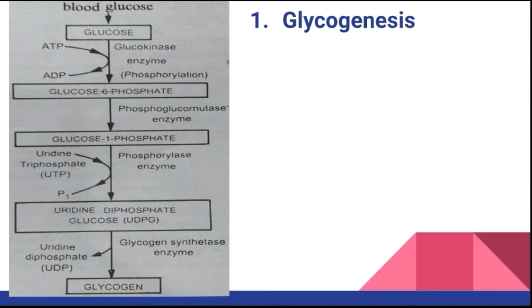The glycogen-storing organs are the liver and muscle cells. Glycogenesis is the anabolic polymerization of glucose into glycogen. Glucose is first phosphorylated in the presence of the enzyme glucokinase and magnesium ion, forming glucose-6-phosphate. This is then converted, and glycogen synthetase changes it into glycogen.